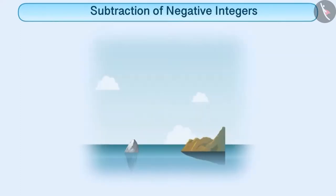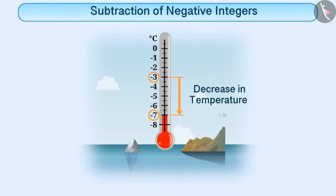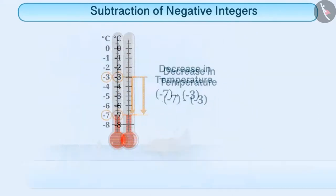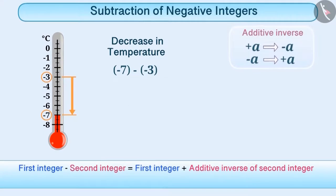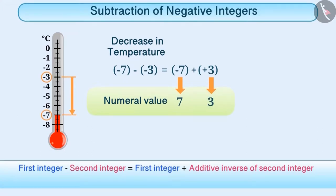Now, we will understand how to do subtraction of negative integers. Suppose the temperature of a place decreases from minus 3 and reaches minus 7. So, the decrease in temperature can be found by subtracting minus 3 from minus 7. In this case also, we will find the additive inverse of the integer that is being subtracted, that is plus 3, and we will add this to minus 7. In order to add plus 3 to minus 7, first we will subtract the smaller numeral value from the larger numeral value, and then we will put the sign of that number whose numeral value is larger. By doing so, we obtain the result minus 4. From the result, it is clear that the temperature has decreased by 4 degrees centigrade.